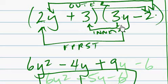And that gives us positive 9y. And then we do the last, which are these two. This one and this one. So 3 times negative 2 gives us negative 6.